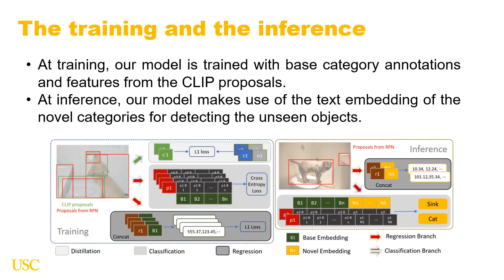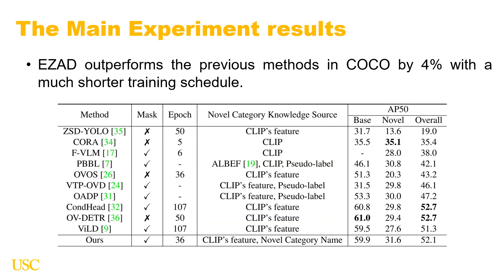For training and inference of our model: at training, our model is trained with base category annotations and features from the CLIP proposals. At inference, our model makes use of text embeddings of novel categories for detecting unseen objects. We evaluate our method on both COCO and LVIS datasets. EZAD outperforms the prior method by 4% with a much shorter training schedule. Our model uses 103 training epochs and achieves 4% improvement on novel categories when compared with the baseline.